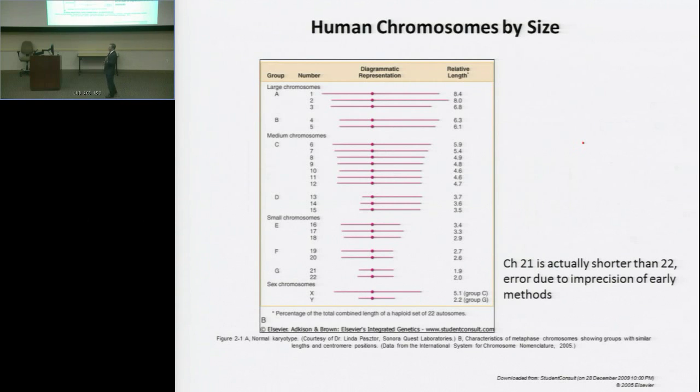The chromosomes are divided up. You don't need to remember this, but there's very different ways of naming them according to groups. They are pretty accurately lined up according to their relative length. The only exception being that chromosome 21 is actually shorter than chromosome 22. That was a mistake made back in the early days of numbering them.